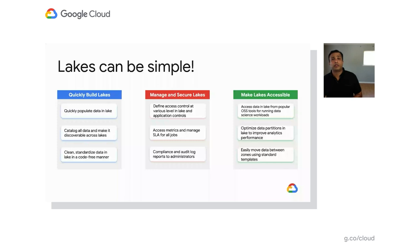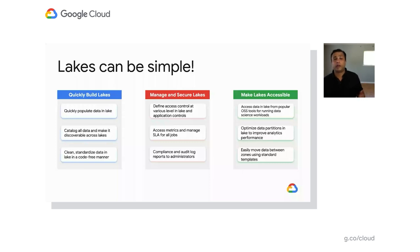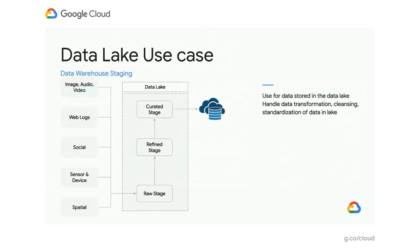With these three simple pillars, you can build an end-to-end lake. There are many use cases that can use this lake. Let's briefly look at the kinds of use cases we've seen with our customers and how they are using GCP products together. The first is data warehouse staging — the primary purpose for which data lakes were built: to offload ELT transformations from the warehouse, providing cost savings while freeing up compute power for analytical queries.